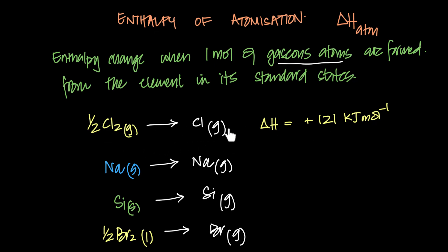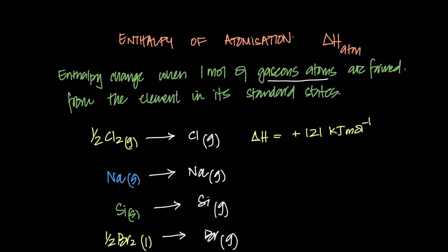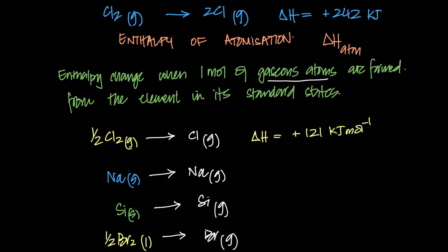For chlorine, the atomization value is positive 121 kJ/mol. For some elements the value closely resembles bond energy — the bond energy for Cl₂ is 242 kJ/mol. The bond energy equation involves breaking one mole of gaseous bonds, so atomization of chlorine is literally half the bond energy, and the equation is the same just scaled by half.